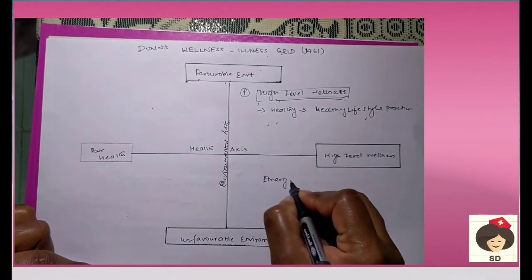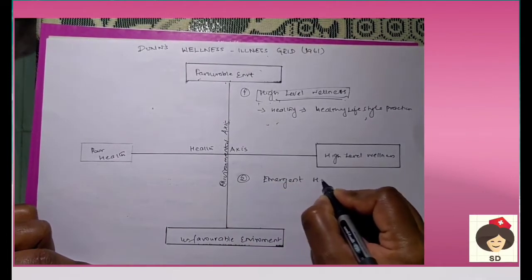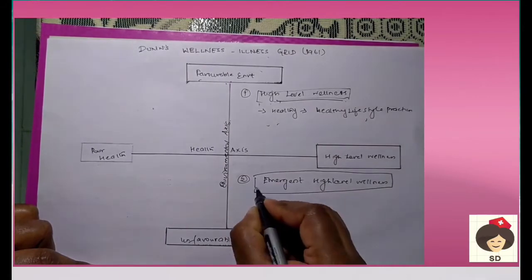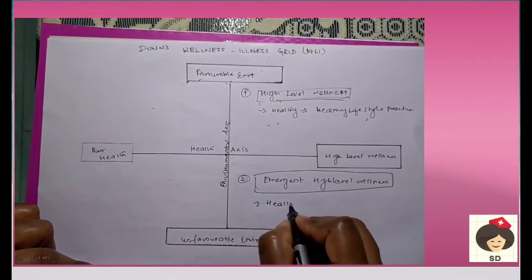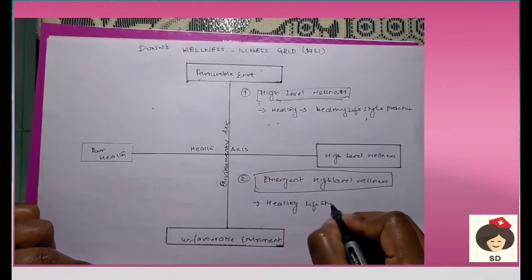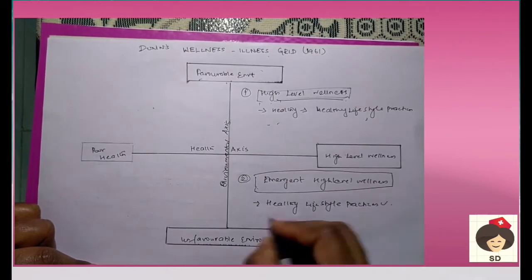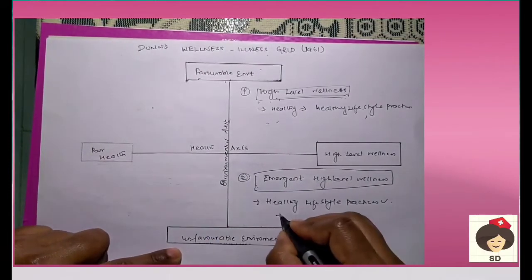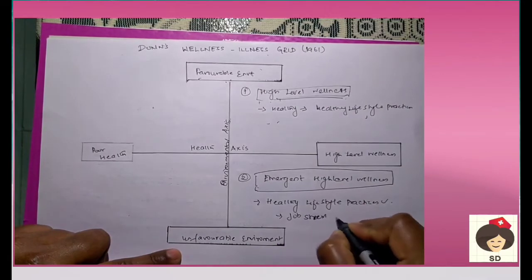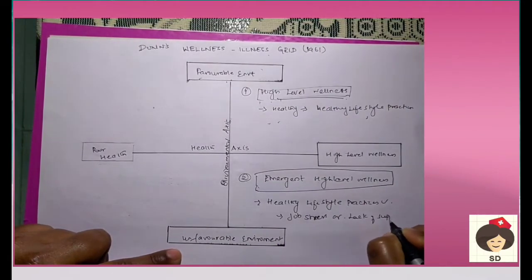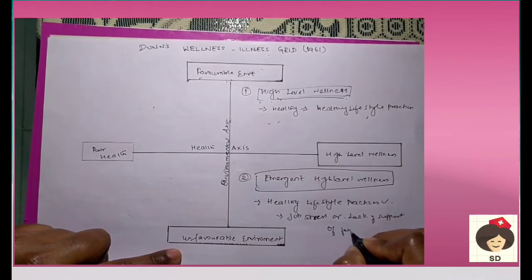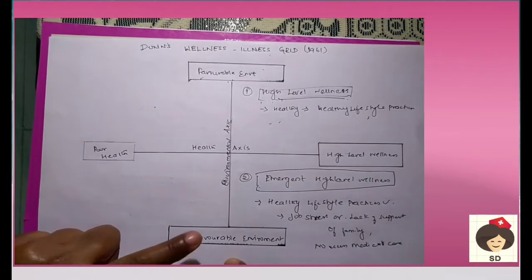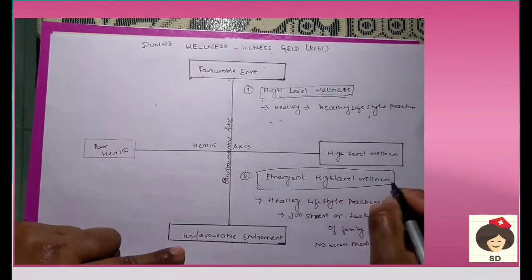The second quadrant is emergent high level wellness. In this quadrant, the person knows about all the healthy lifestyle practices, but due to certain circumstances, he is not able to follow them due to some unfavorable environment. This can be any job stress, lack of support from family members, or no access to medical care.